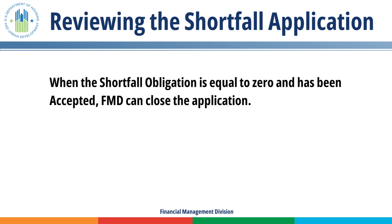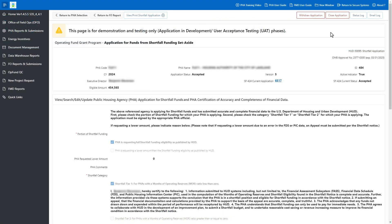Closing the Shortfall Application. When the Shortfall Obligation is equal to zero and the application has been accepted, FMD can close the application by clicking the Close Application button.